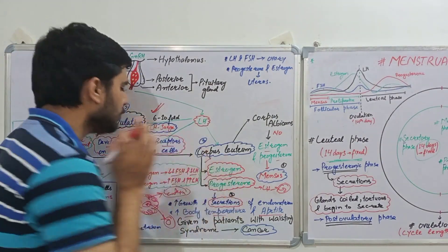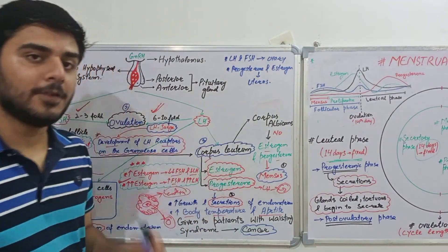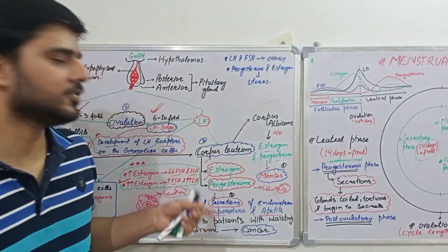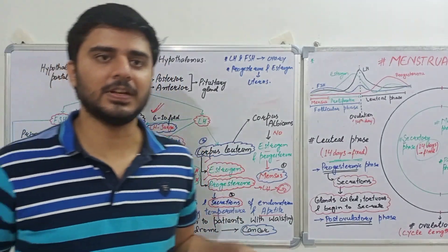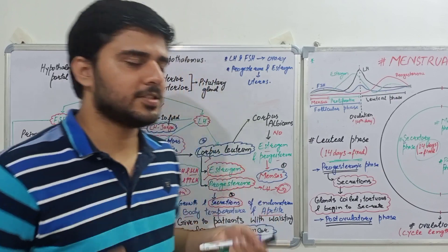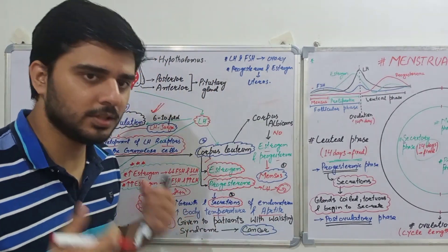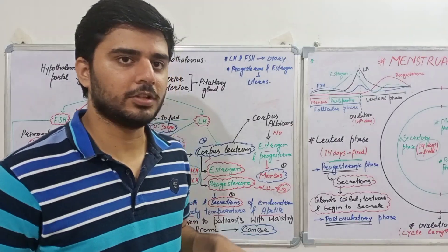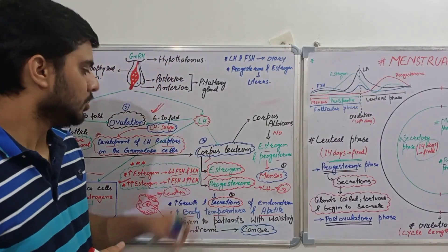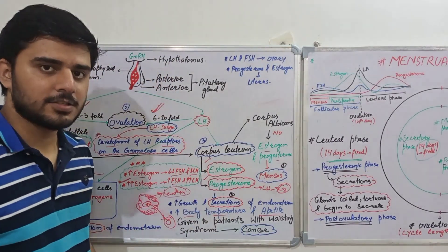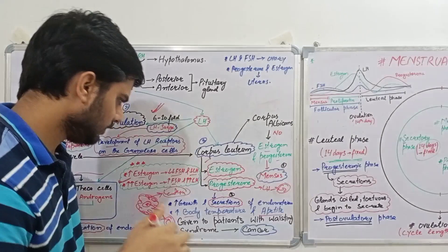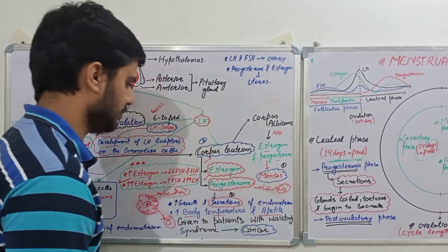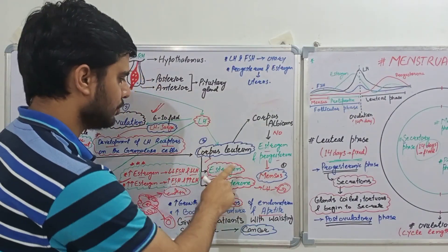The function of progesterone is that it increases secretory activities. In the breast, it helps in milk synthesis. In the uterus, it helps in the formation of uterine glands and increases uterine secretions.